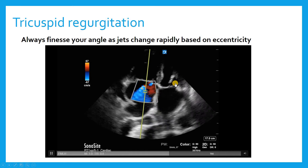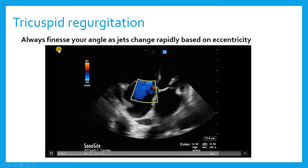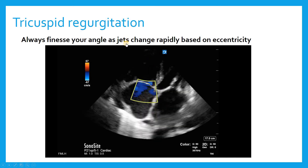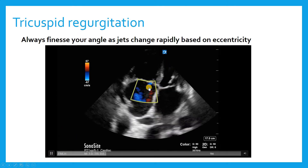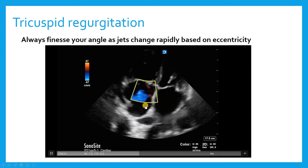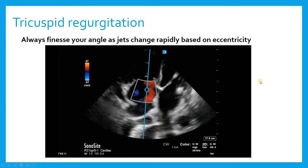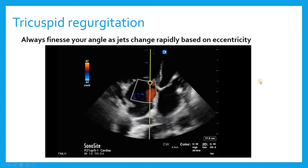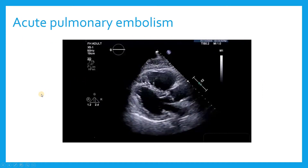From the apical four-chamber view, you really have to finesse the angle of your probe a little bit when in this view and try to get the jet to come out maximally. Depending on how you're looking at the jet, it may not look like very much — and then it may change to occupying more than half the right atrium, and you'd realize it's actually a much bigger jet than with the first view.